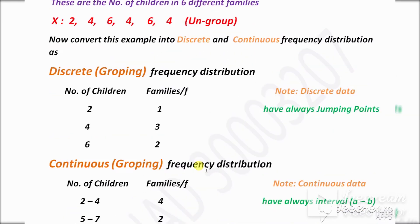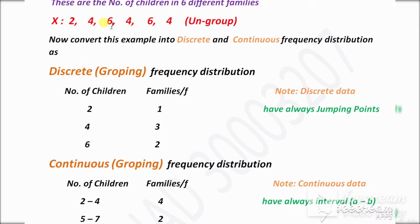For continuous grouping, keep in mind that continuous data always has intervals like A to B — for example, 0 to 5, 5 to 10, or 0 to 10, 10 to 20. So from 2 to 4, then 5 to 7. Numbers 2 to 4 cover 4 families, and from 5 to 7 there are only 2 families with values 6 and 6.